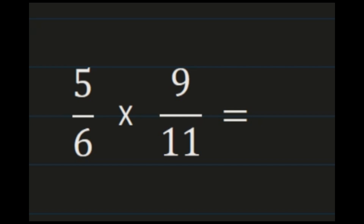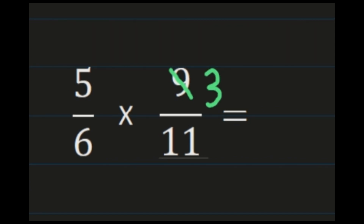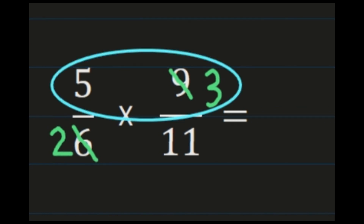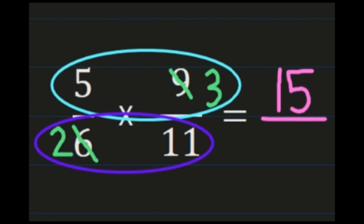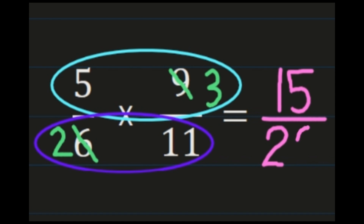Our next example, we have 5 sixths times 9 elevenths, and we're going to use cross simplification. Looking at 5 and 11, they don't share any common factors, so I can't simplify there. But 9 and 6 share a common factor of 3. So 9 divided by 3 is 3, and 6 divided by 3 is 2. Now multiplying numerators: 5 times 3 is 15. And denominators: 2 times 11 is 22. So my final product is 15 twenty-seconds.